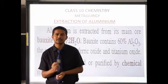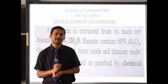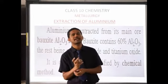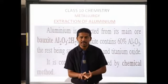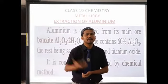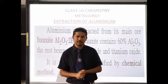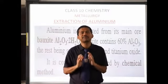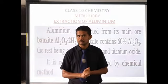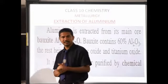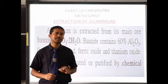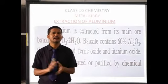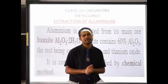In the chemical method, we take a solvent or reagent in which the ore is soluble but impurities are insoluble. Concentration of ore by chemical method — leaching — is appropriate because there are solvents in which bauxite dissolves while the rest of the impurities can be separated.